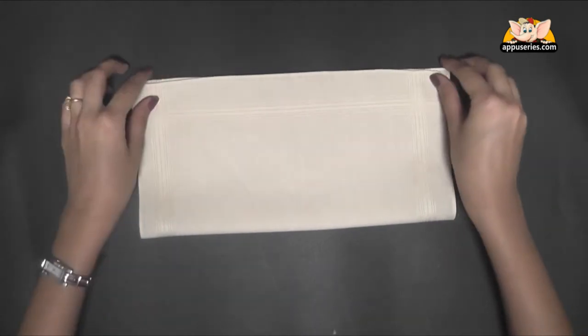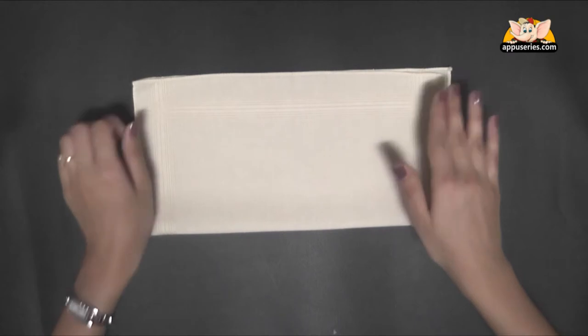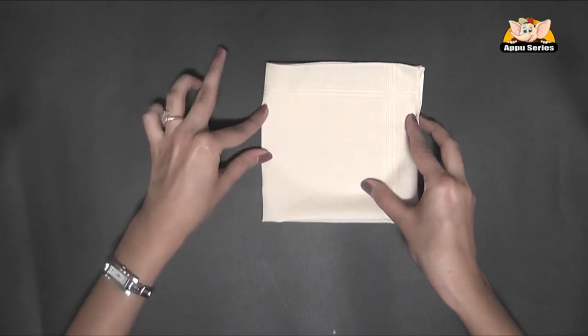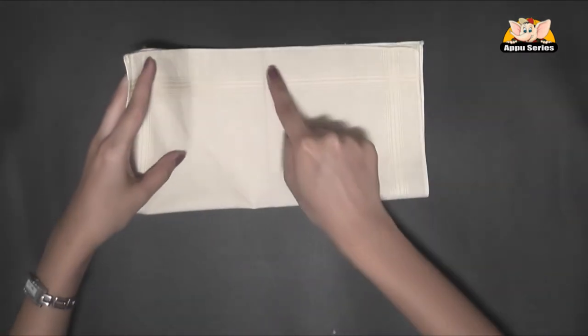We'll start by laying the napkin face down, then we'll fold it into half and then we'll fold it in quarters and just give it a very light crease here so that you can see the center line.